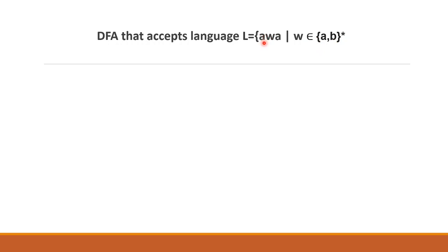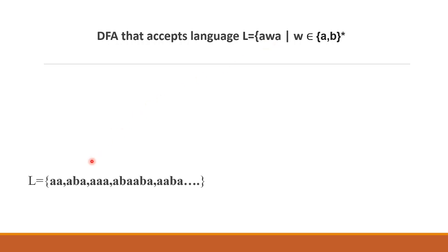So the language is strings of the form 'awa' — that is, surrounded by 'a'. The string should start with 'a' and end with 'a'. For example, 'aa' is in the language — that is our minimum string, since w can be epsilon. Strings like 'aba', 'aaba' are also in the language.